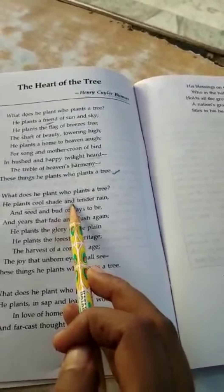He says that he works, the person who plants a tree works like a bridge between previous generation and the coming generation. Because he provides seeds and birds and these seeds and birds will get a new life in the form of a tree. He plants a forest heritage. Heritage means culture. Culture means traditions, languages, beliefs, etc. So a person who plants a tree continues the forest culture. He just adds to the greenery of the forest. Next line is the harvest of a coming age. The joy that unborn eyes shall see. Unborn eyes means the coming generation.